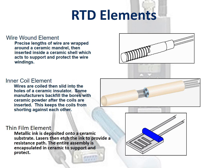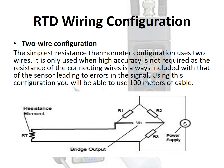The simplest resistance thermometer configuration uses two wires. It is only used when high accuracy is not required, as the resistance of the connecting wires is always included with that of the sensor, leading to errors in the signal. Using this configuration, you will be able to use 100 meters of cable.